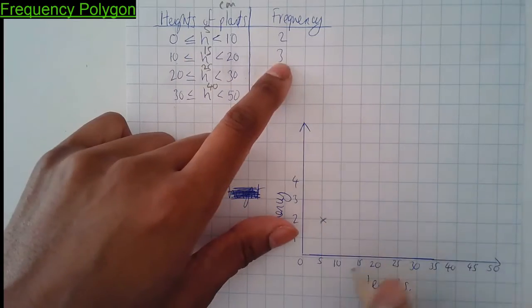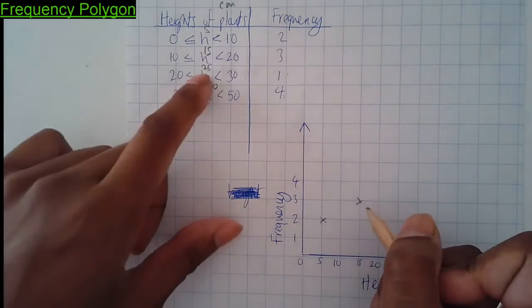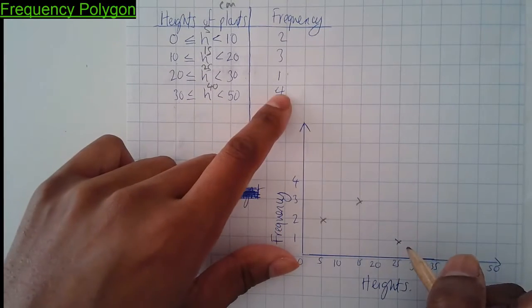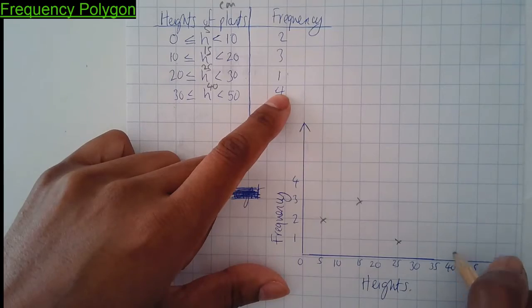Fifteen and three. Twenty-five and one. Forty and four.